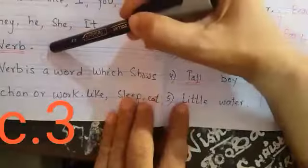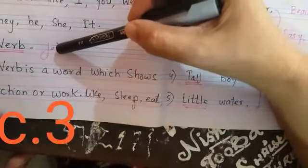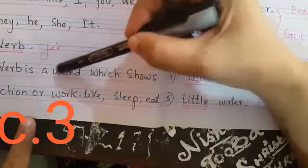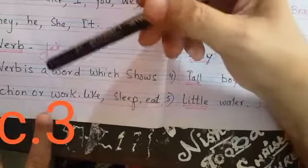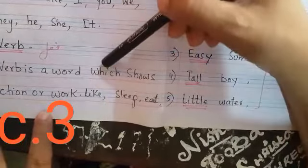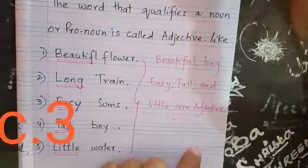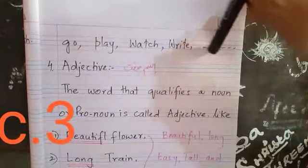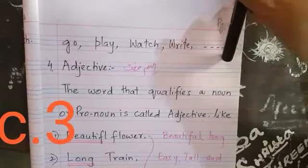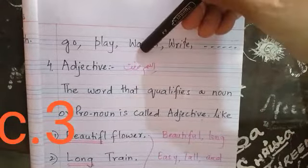Now come, verb. Verb is a word which shows action or work. That is, work found and work done. That is called verb, like see, eat, go, play, watch, write. Eating, drinking, sleeping, resting, everything. Go, play, watch, write, etc. Whatever work is there, what are they all called? Verb.